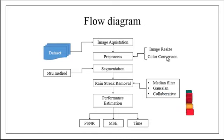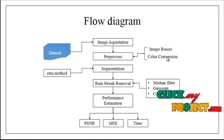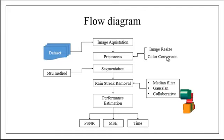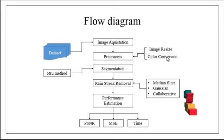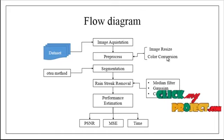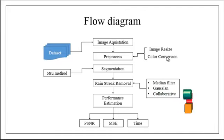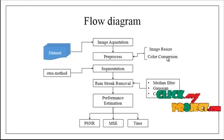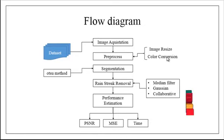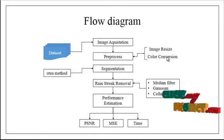The background is the unwanted region and the foreground is the required region. In this process, the foreground will be the rain streak regions — these are the regions we need to remove. For the rain streak removal stage, we have three methods: the median filter method, the Gaussian filter method, and the collaborative method. By comparing and using these three methods, we remove the rain streaks from the image.